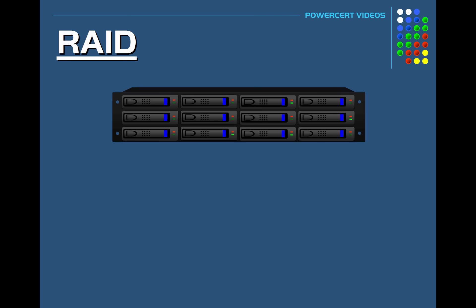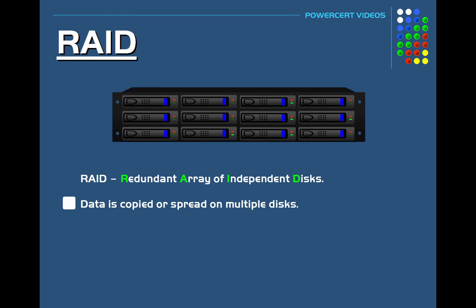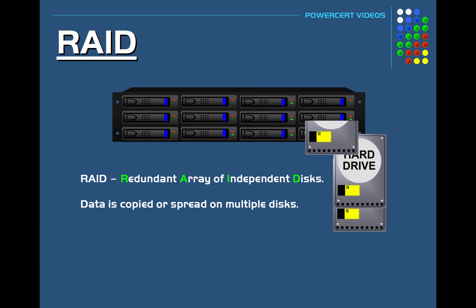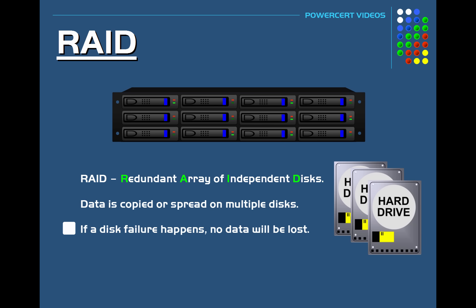RAID stands for Redundant Array of Independent or Inexpensive Disks. In a RAID setup the data is copied or spread on multiple disks so that in the event of a disk failure no data would be lost, because that data is spread on other disks.